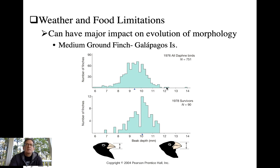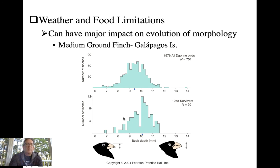In 1977 there was a severe drought that especially hit hard species of plants that produce small seeds — the species that medium ground finches with the smallest bills relied on. Birds with small bills just couldn't physically handle the seeds from species that produced large seeds, so they had greater death rates and lower reproductive success compared to big-billed individuals, who could feed off those larger seeds.